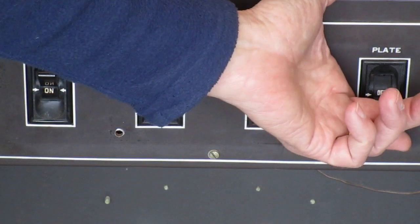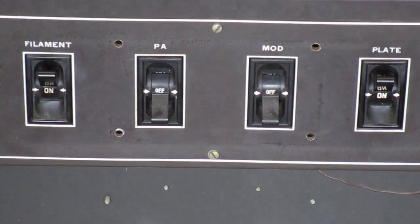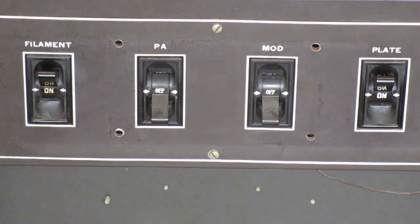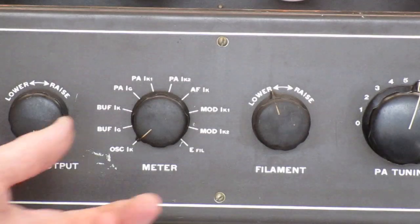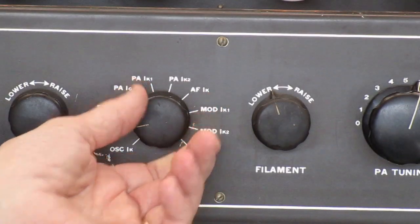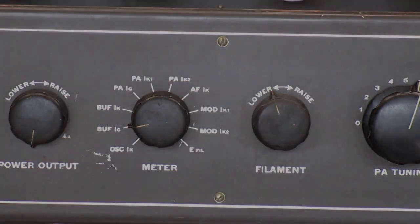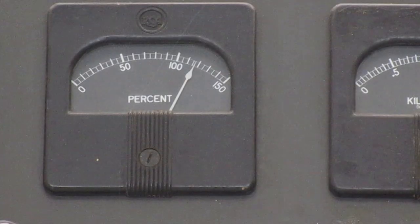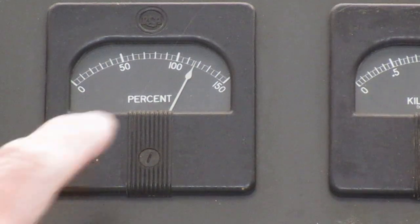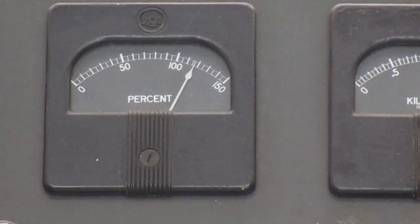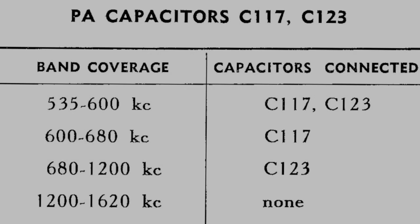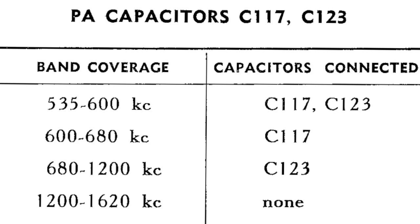Well, it's time for a reality check, so turn on the filament and plate supply. And this transmitter has an adjustable meter you can select and measure various parameters. We'll turn it into the buffer grid setting, and that reading should be from 80 to 100 percent or 120 percent. It's about 115 percent, so that signal is good.